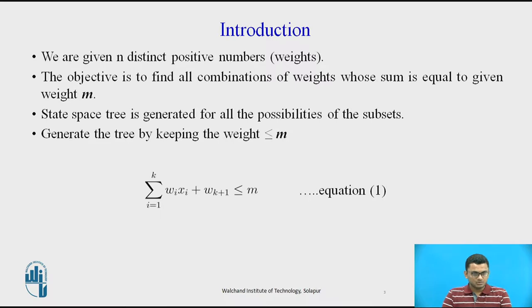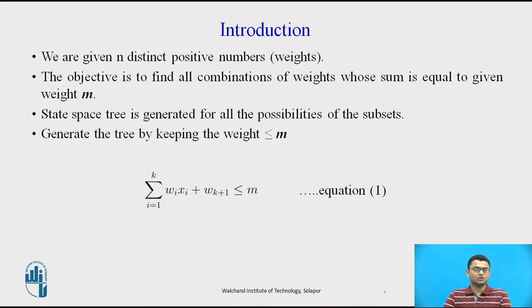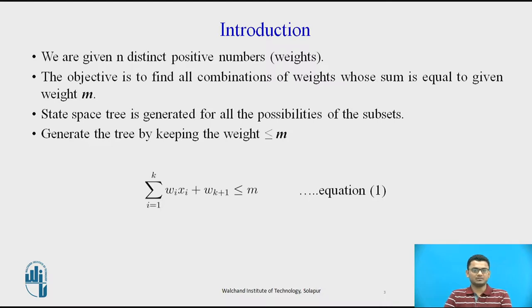Whenever we apply the backtracking approach, we generate a state space tree. For this problem also, a state space tree will be generated to check the possibilities of the subset where the total weight of the subset will be equal to m. We generate the tree by keeping the weight less than or equal to m.